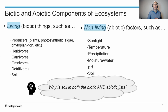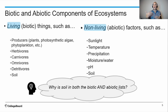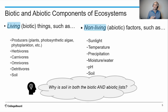Let's talk about some biotic and abiotic components of ecosystems. The biotic parts are the living parts — they include producers, plants, photosynthetic algae, phytoplankton, herbivores, carnivores, omnivores, detritivores, and soil. Soil is in that living category. We also have abiotic factors — the non-living parts — such as sunlight, temperature, precipitation, moisture or water levels, the pH of the soil or water, and soil. There it is again in the abiotic factor list. So consider: why is soil in both the biotic and the abiotic lists?